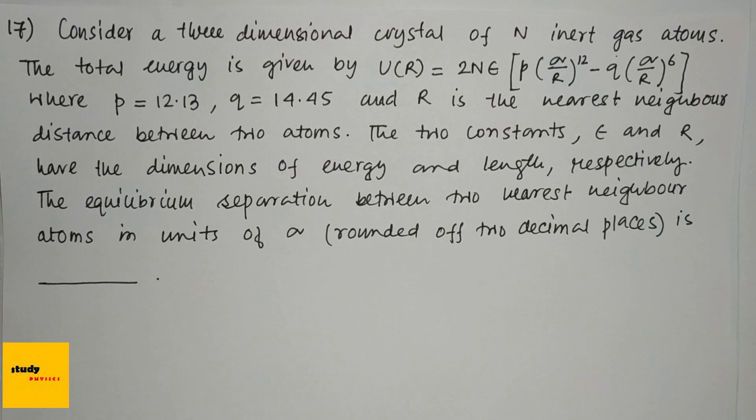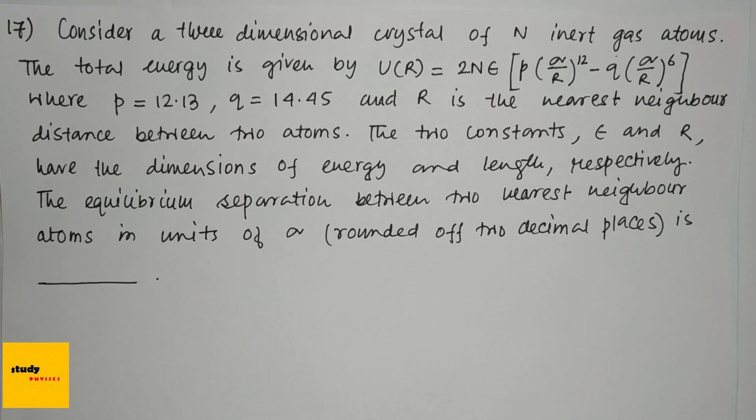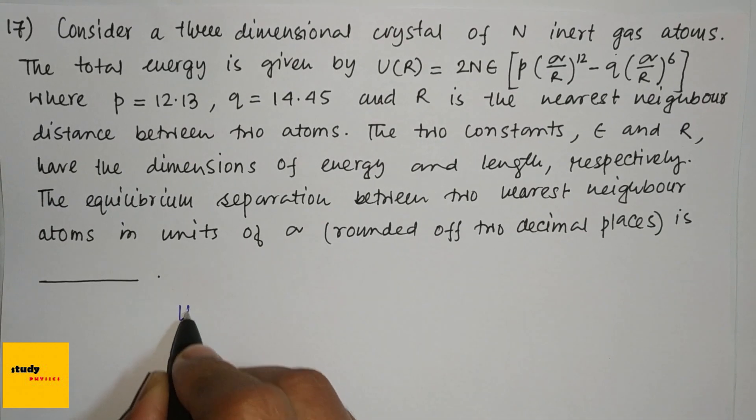And R is the nearest neighbor distance between two atoms. The two constants ε and σ have the dimensions of energy and length respectively. The equilibrium separation between two nearest neighbor atoms in units of σ is...